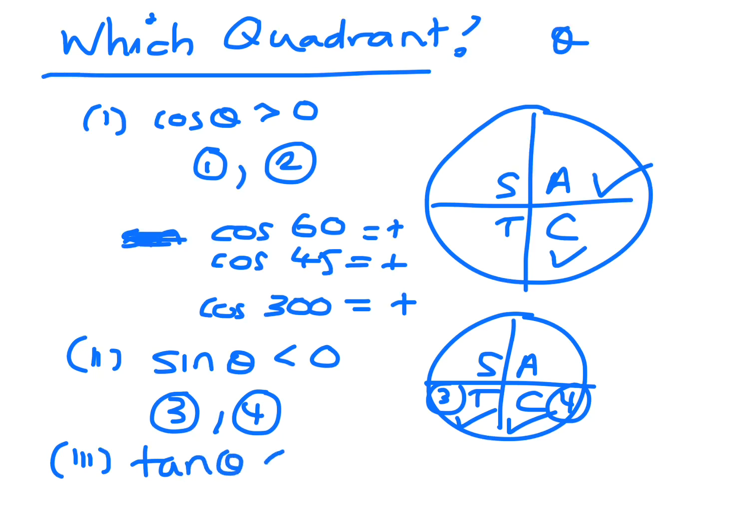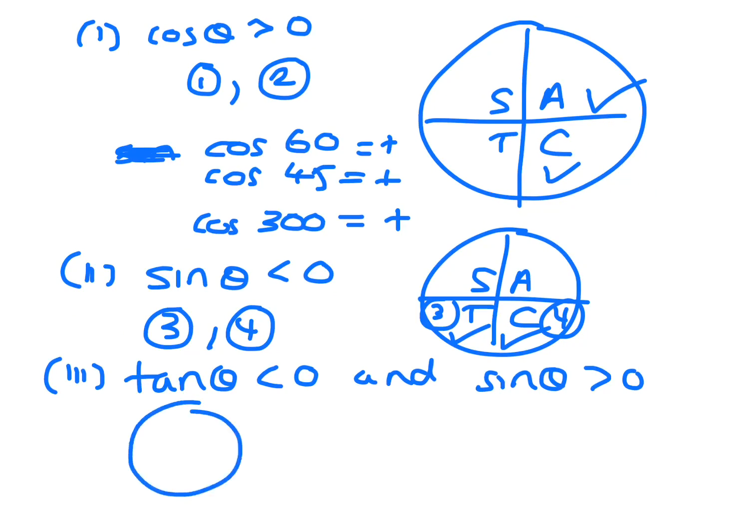Say we have tan theta is less than 0 and sine theta is greater than 0. So where is tan less than 0? And where is sine greater than 0? Tan is less than 0, all stations to Coffs, so it'll be quadrant 2 and quadrant 3.